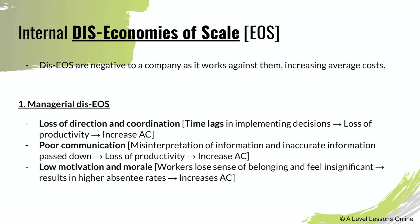Diseconomies of scale work against a company, increasing its costs. For instance, there can be a loss of direction and coordination, and time lags in implementing decisions when higher management cannot effectively pass on their ideas to workers, resulting in lower productivity and higher average cost. Poor communication and misinterpretation of information can also reduce productivity. Additionally, low worker motivation — common in large operations — can lead to higher absenteeism, also increasing average cost.